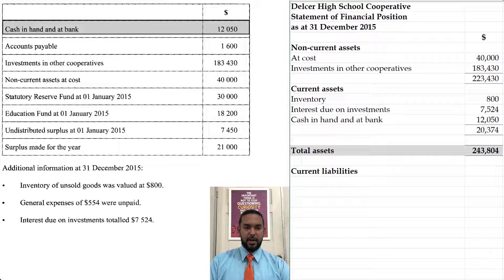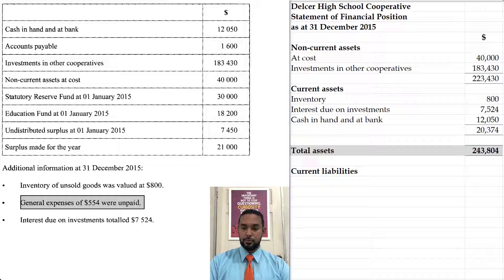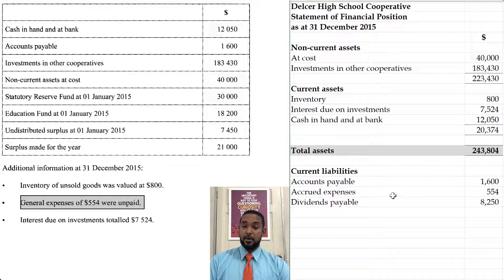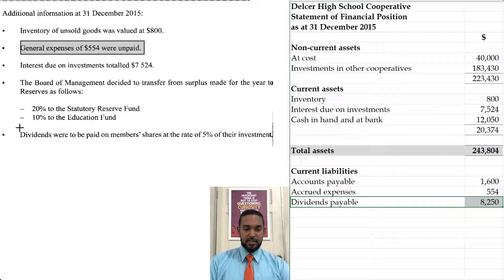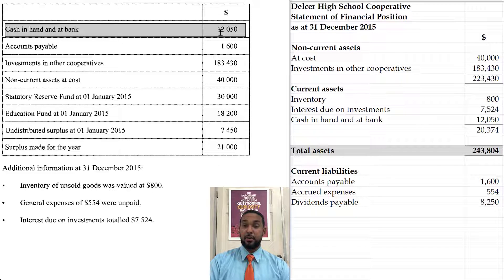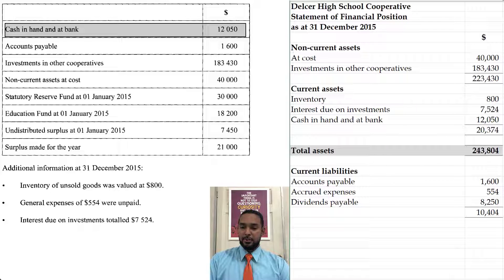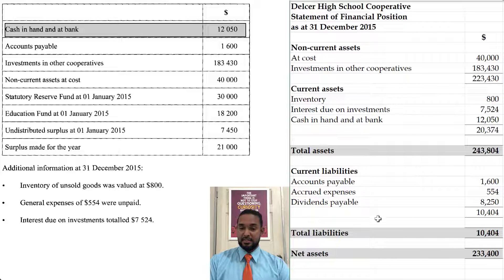Now let's talk about liabilities. I'm seeing accounts payable of $1,600, and general expenses unpaid — that's an accrual. And dividend payable — I almost forgot that. Dividends were to be paid on member shares. Now, they said to be paid, but if we paid them we would have to minus that amount from cash in hand or bank. If you didn't count them as a liability, you would have had to subtract them from cash because the balance shown would be before dividends were paid. Either way, the net effect on the balance sheet is the same. We have no non-current liabilities, so total liabilities is $10,404, and net assets is the difference between total assets and total liabilities.